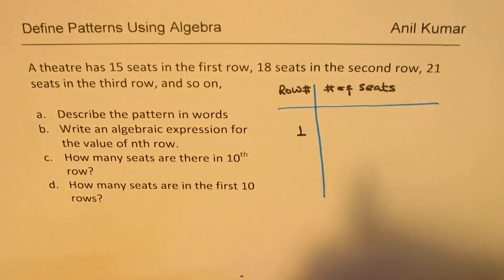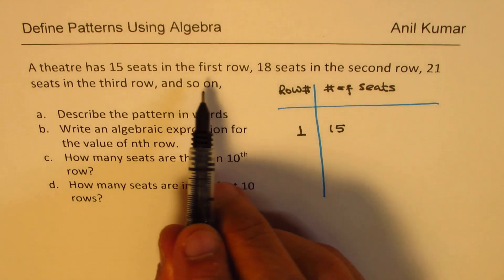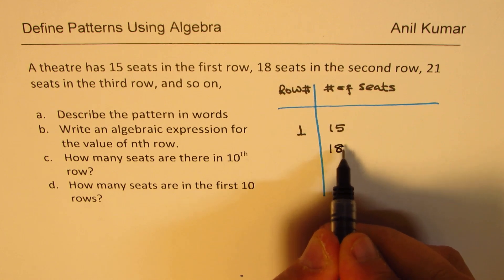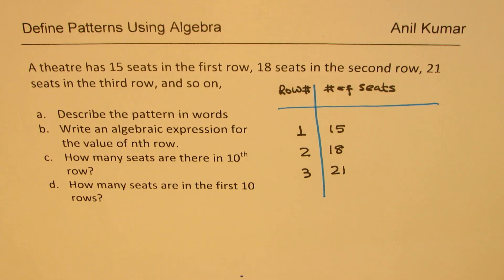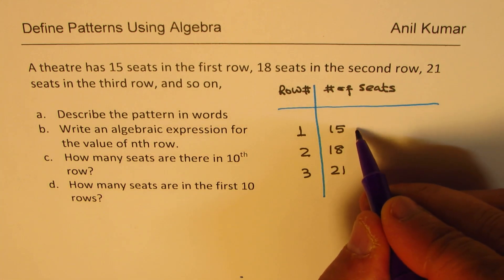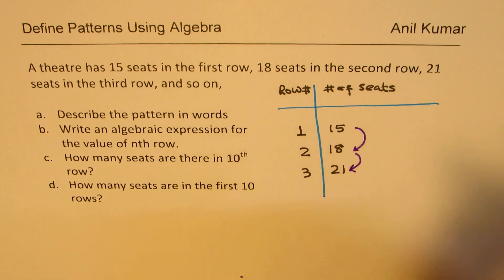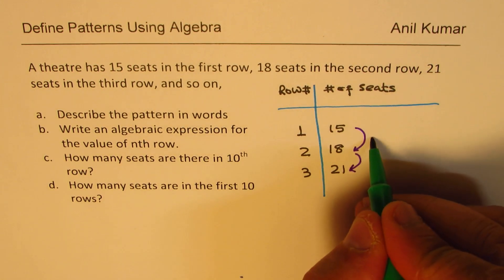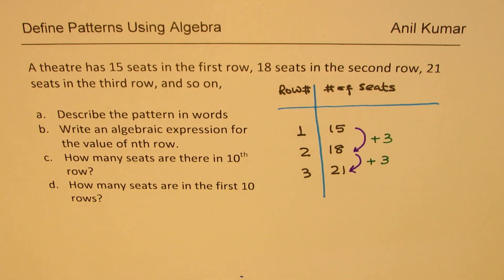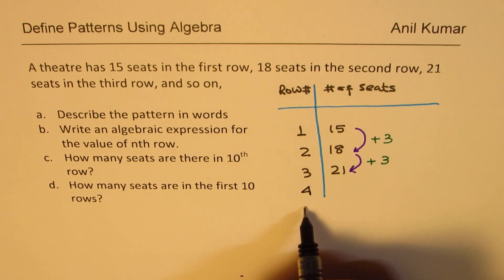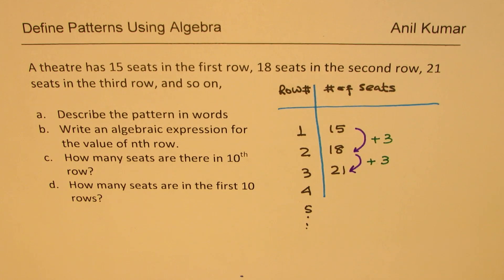In the first row, we are given 15 seats. 18 seats in the second row, 21 in the third row, and so on. So when it says and so on, we have to look for a pattern. So when you go from 15 to 18, and then from 18 to 21, what do you notice? Well, we notice that 3 has been added. So each time, there are 3 extra seats added as the row number increases. Based on this pattern, we can easily say that on the fourth row, and fifth, and so on, the number of seats should be how much?